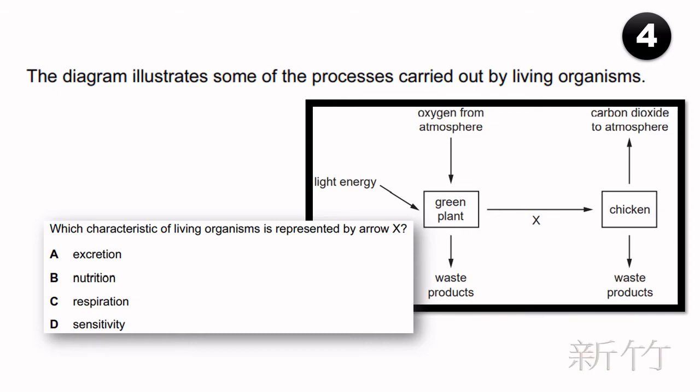The diagram illustrates some of the processes carried out by living organisms. Which characteristic of living organisms is represented by arrow X? Nutrition.